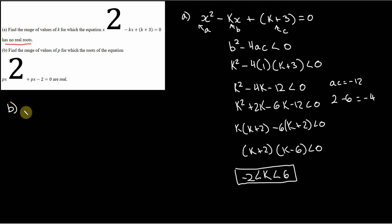And part b is the exact same process and the same logic here. So it says find the range of values of p for which the roots of the equation, px squared plus px minus 2 equals 0 are real. So it has real roots.